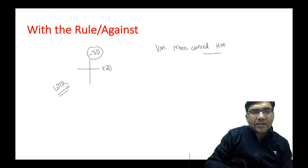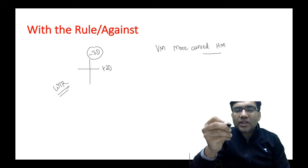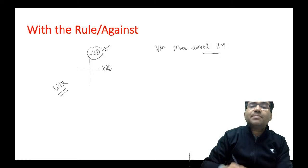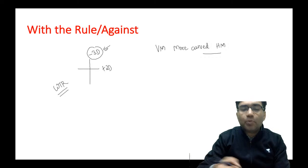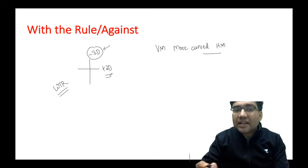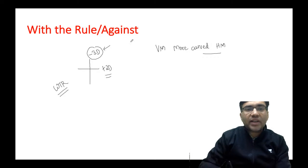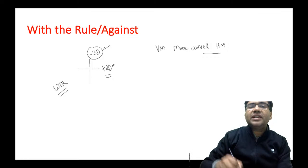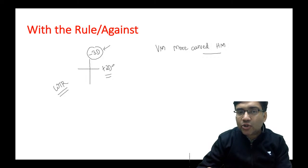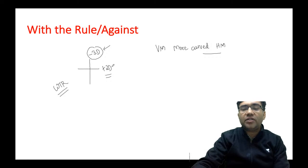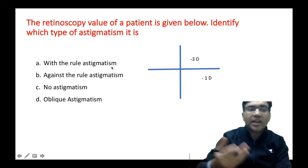With-the-rule astigmatism means the vertical meridian is more curved compared to the horizontal meridian. A minus power is always myopic and a plus power is hypermetropic. So when your vertical meridian is more curved compared to your horizontal meridian, this is called with-the-rule astigmatism.